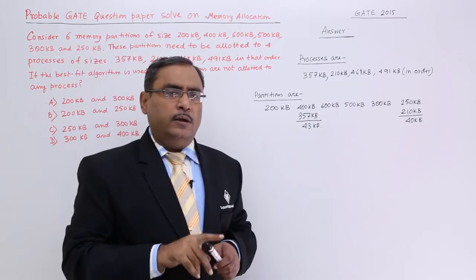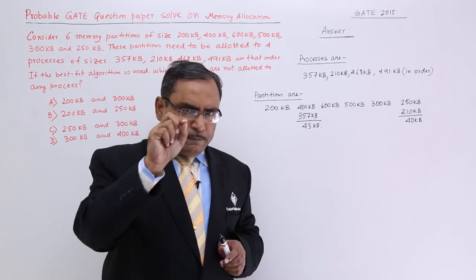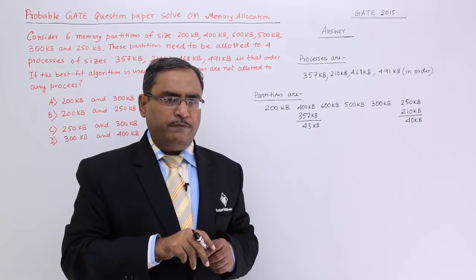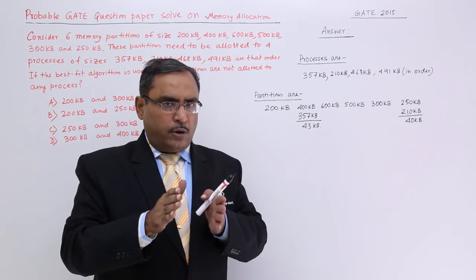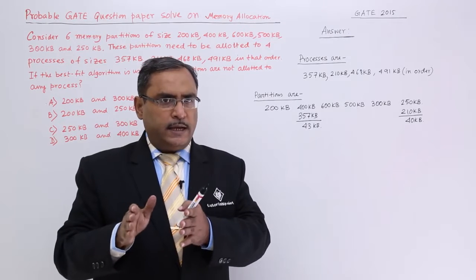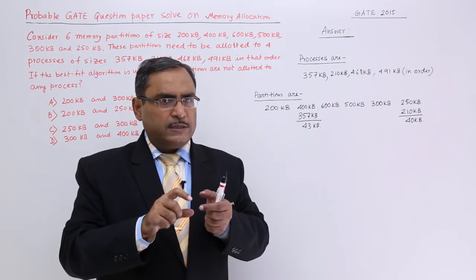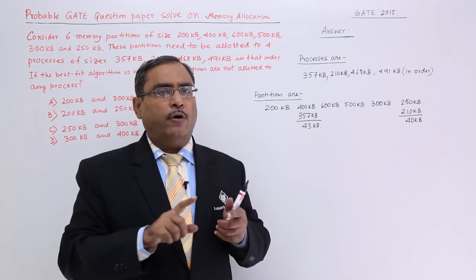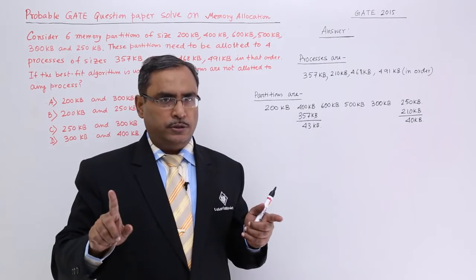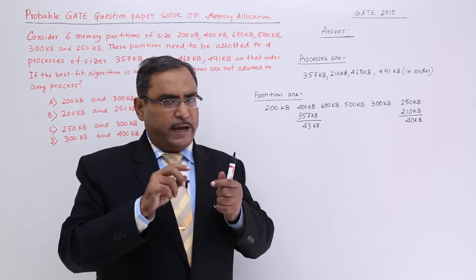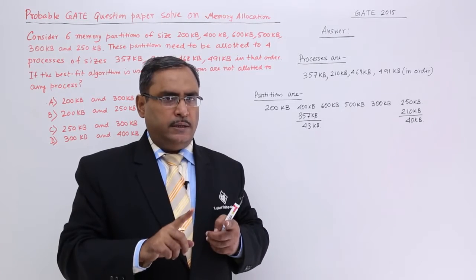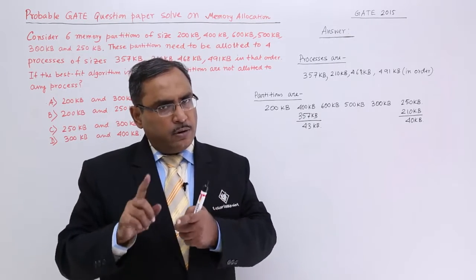That means we are allocating processes to that particular memory hole or memory free space, whose size is greater than or equal to the current process size. And that memory hole must be having the size minimum out of all the available memory holes. The process will be allocated to that very memory hole whose size will be minimum, but its size will be greater than or equal to the process size.